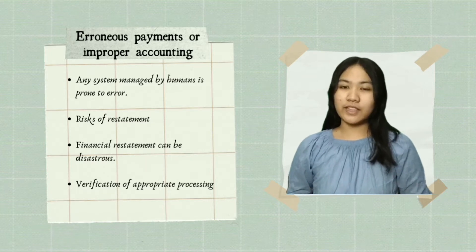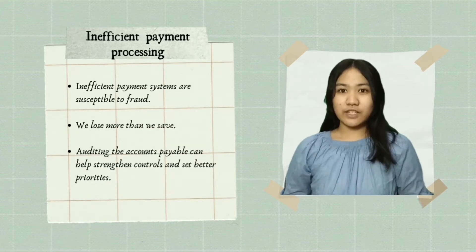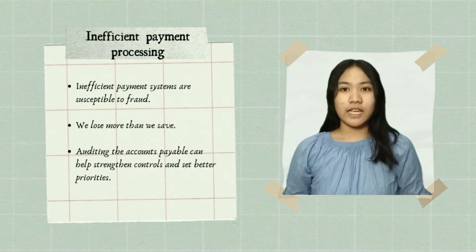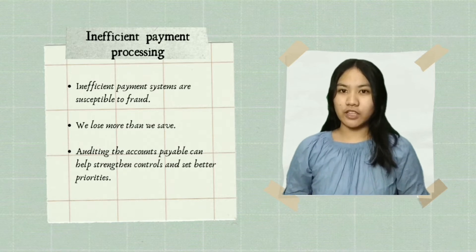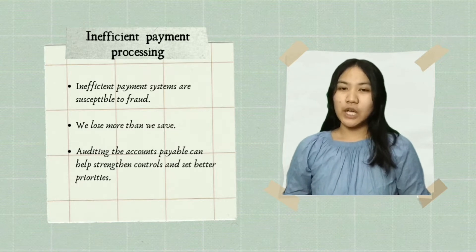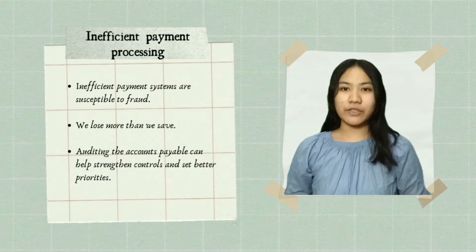Through auditing, we can lessen the chances of any restatement through verification of appropriate processing, which is critical to an organization's success. The last reason is inefficient payment processing — inefficient payment systems are susceptible to fraud. We think saving time will save money, when in fact we often end up losing more. We need to audit accounts payable to help strengthen controls and set better priorities, which will help us save not only time, but also money and resources. The first audit test is the vendor summary totals period comparisons.